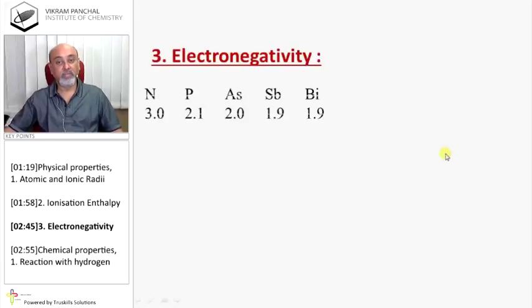Electronegativity: Nitrogen highest 3.0, then phosphorus to bismuth electronegativity decreases.